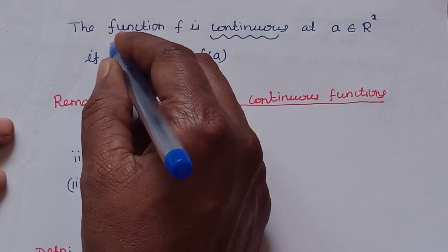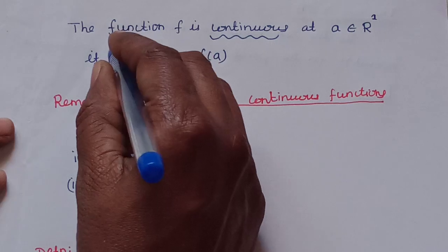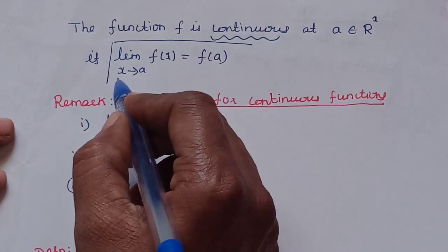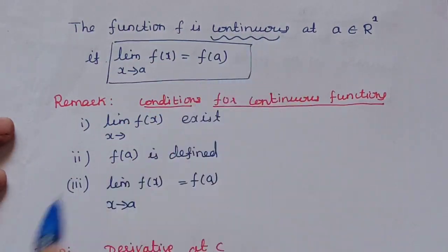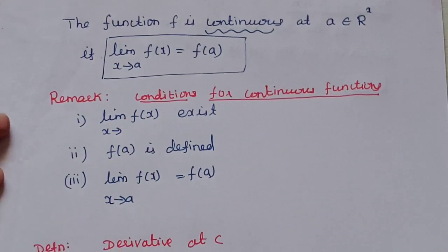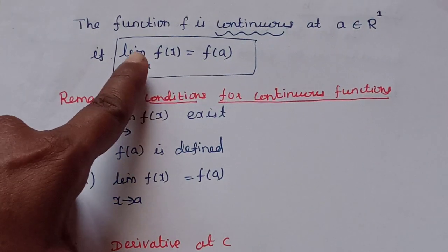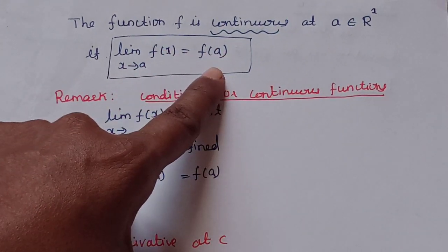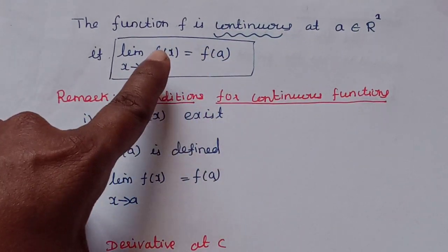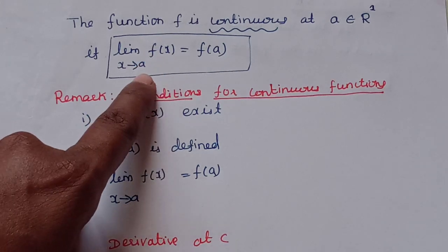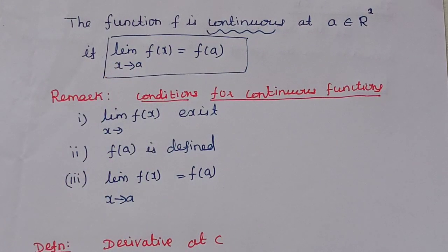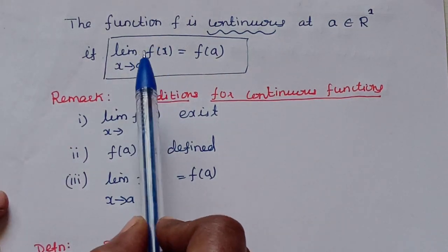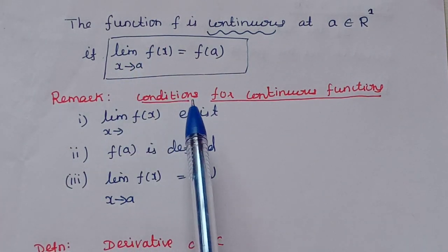This condition is satisfied: if the limit of f as x tends to a is equal to f(a). That is, the limit as x tends to a of f(x) is equal to f(a). We have this function continuous at the point a. In this definition, we will explain the continuous function. The left-hand side is the limit, and the limit must exist.